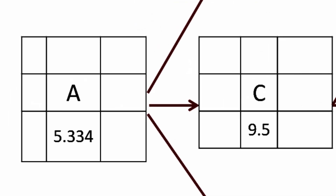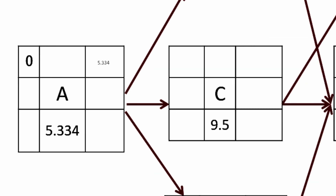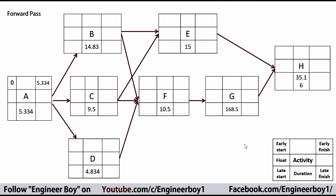Let's focus on activity A. The early start of activity A is zero, and adding the duration gives us the early finish, which is 5.334. Then we simply forward the early finish of activity A to the early start of each activity B, C, and D, because A is the predecessor for those three.